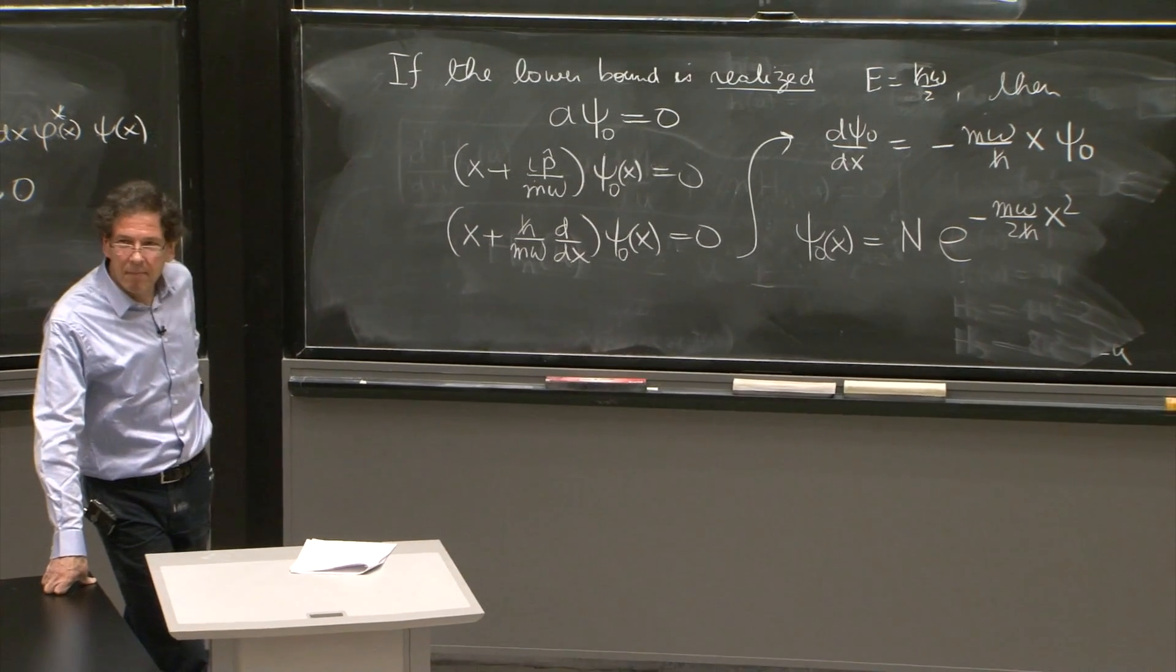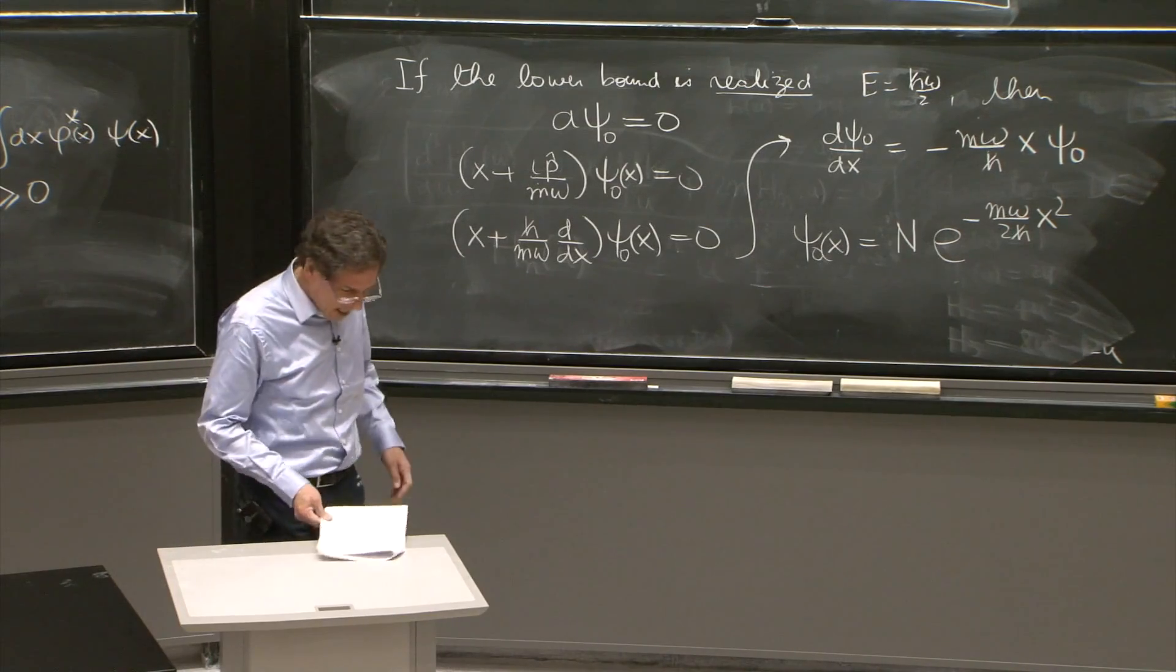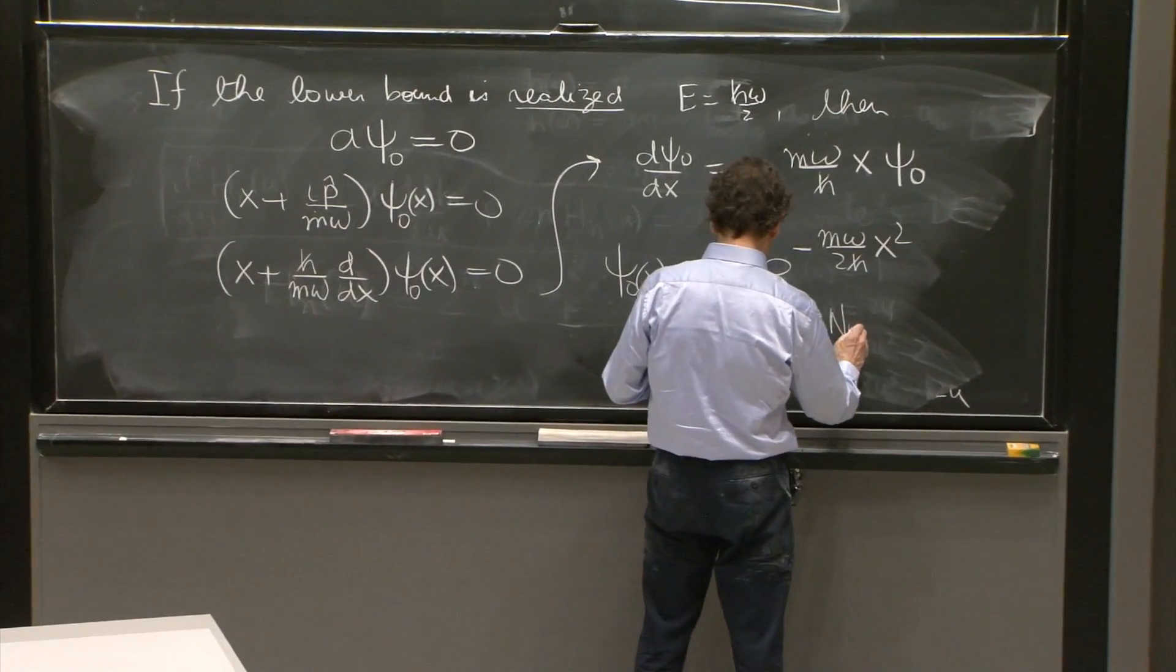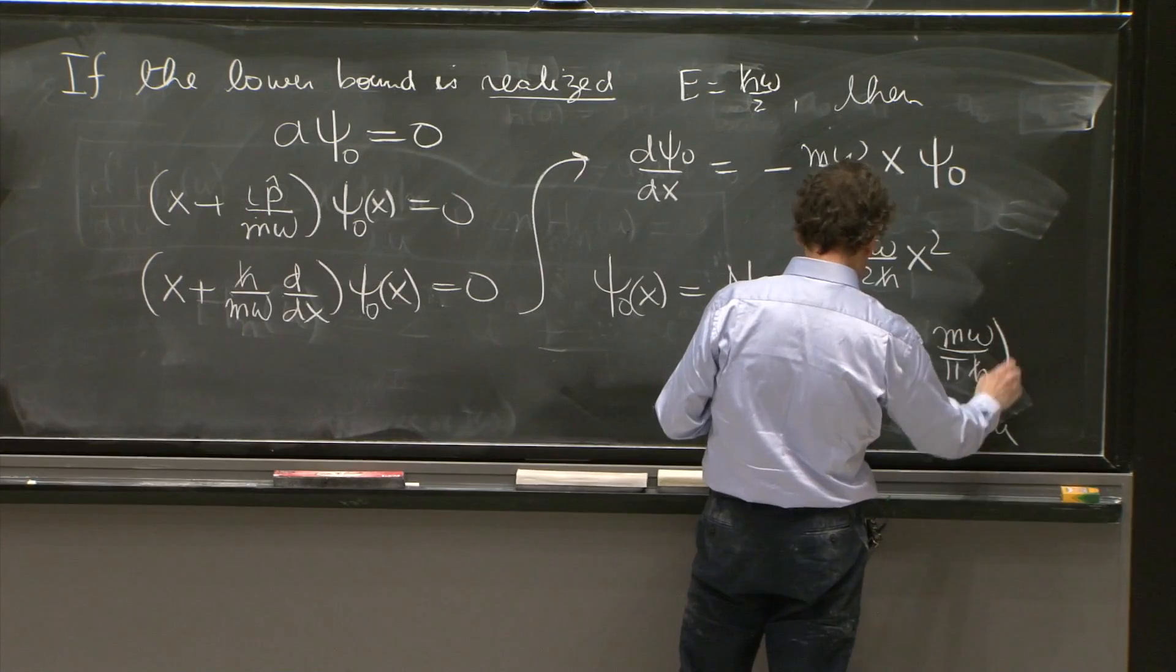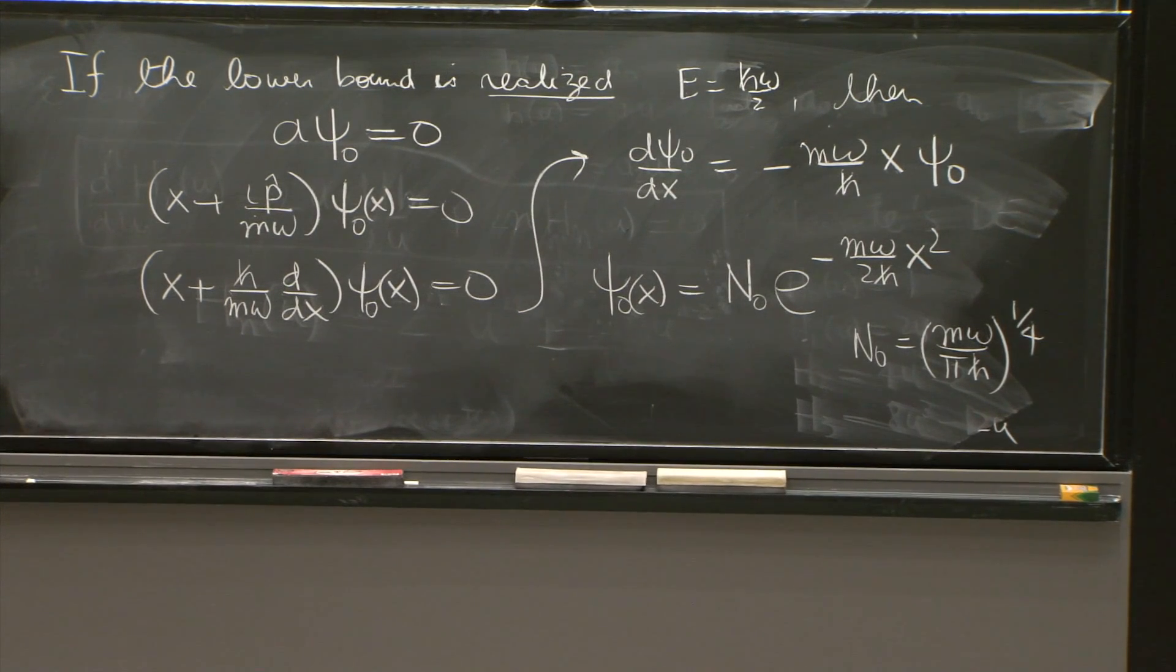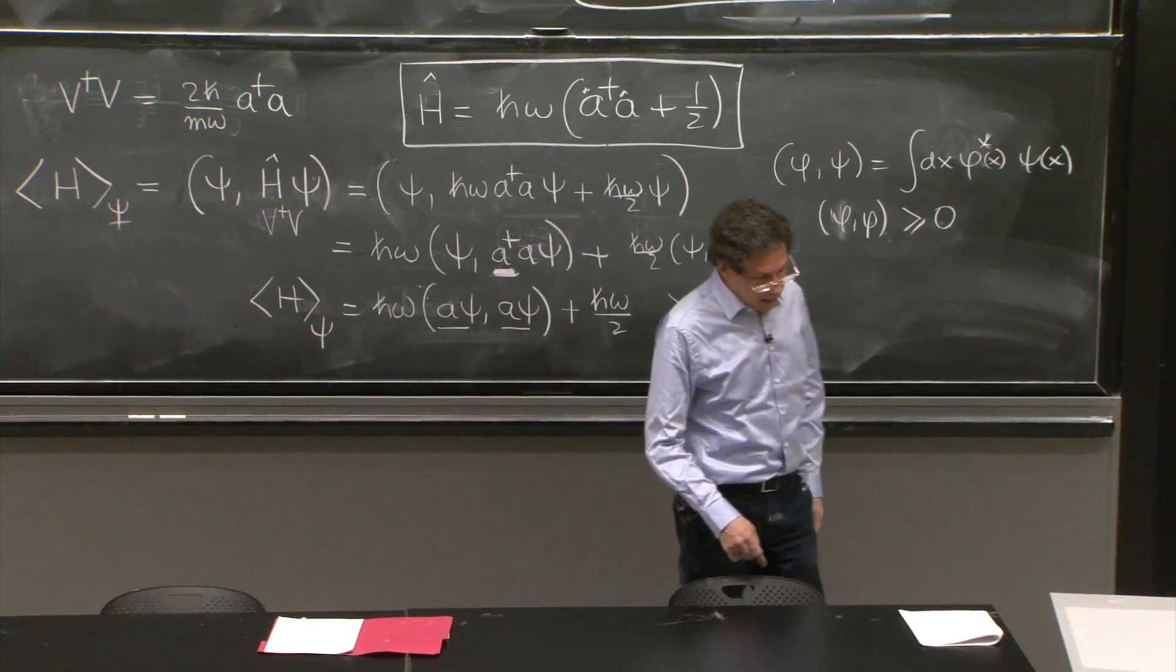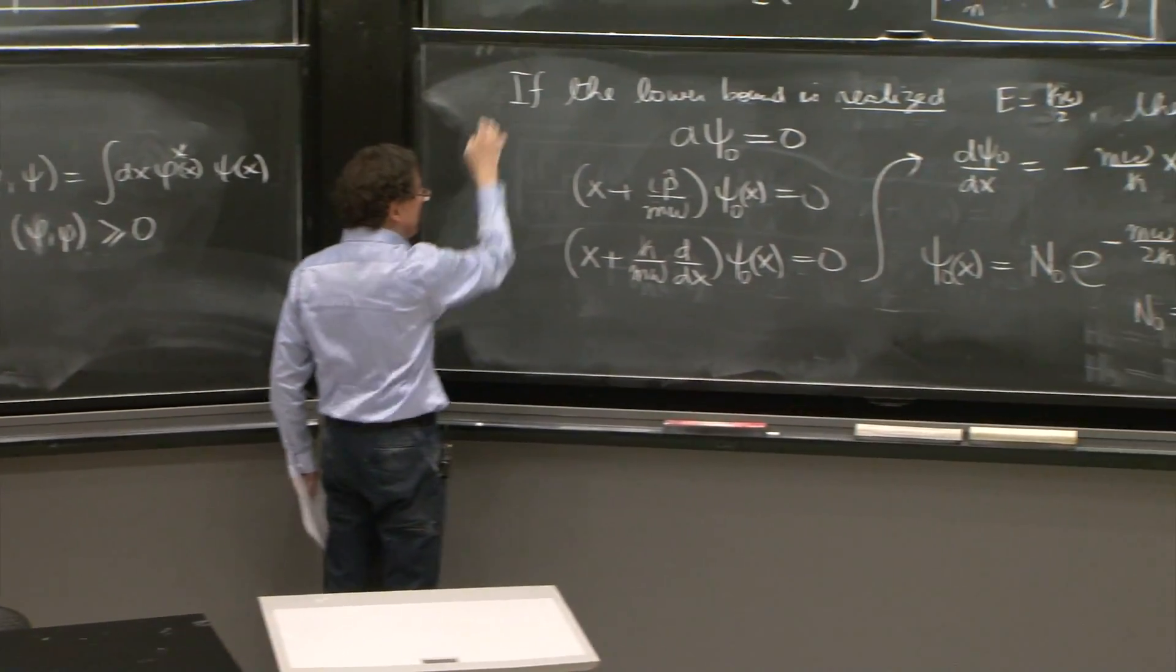psi 0 of x equal to some number times that. The number is the Hermite polynomial sub 0, and that exponential is the exponential we wrote a few blackboards ago. It's a good exponential. It's a perfect Gaussian. It's our ground state. n0, if you want to normalize it, n0 is equal to m omega over pi h bar to the 1/4. And that is the ground state, and it has energy h omega over 2.